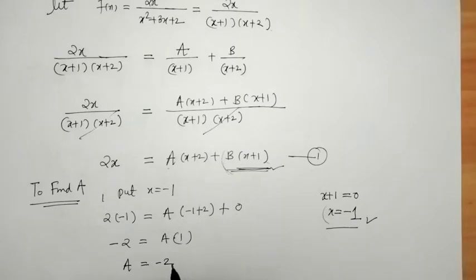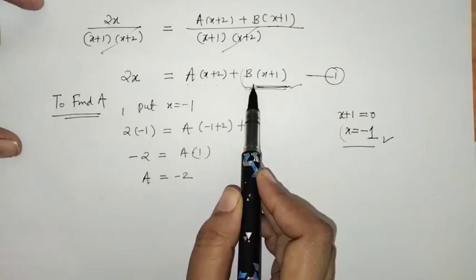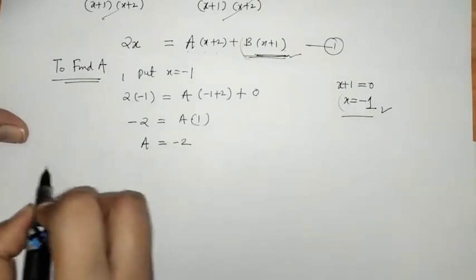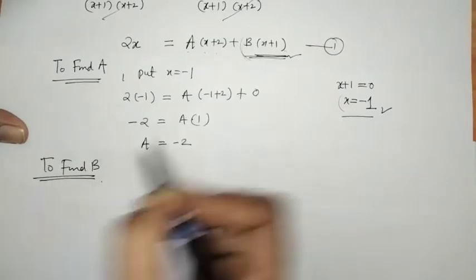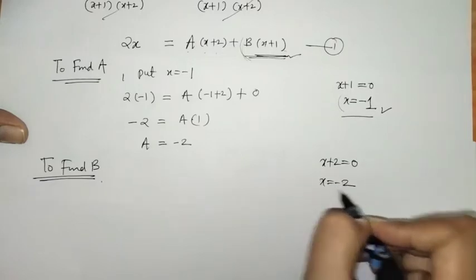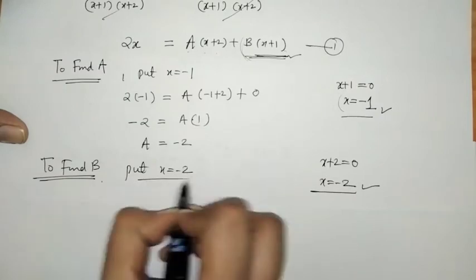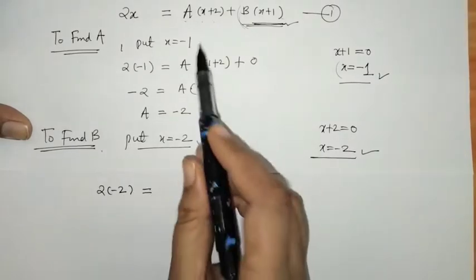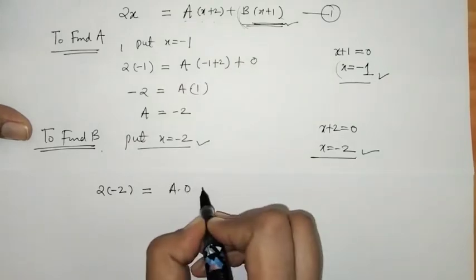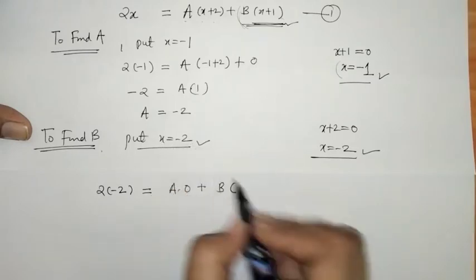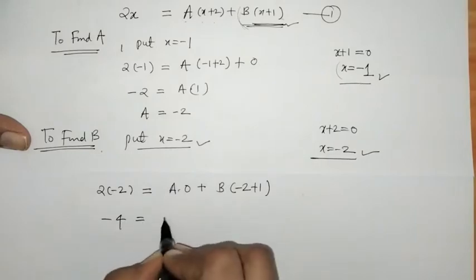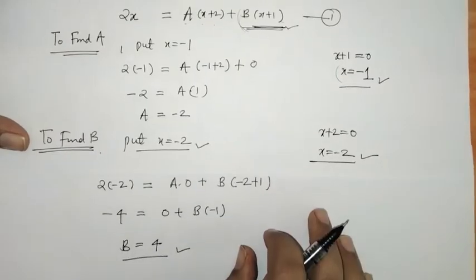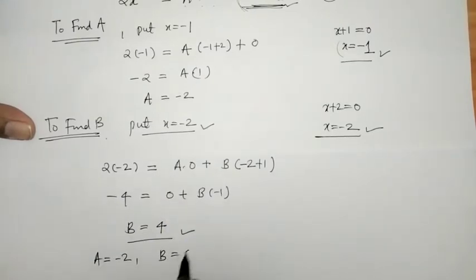In the same manner, to find B, we put x+2 = 0, that means x = -2. Substituting x = -2: the A term becomes zero, giving 2(-2) = B(-2+1) = B(-1). So -4 = -B, therefore B = 4. Thus A = -2 and B = 4.